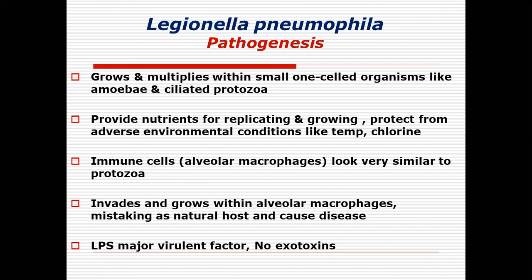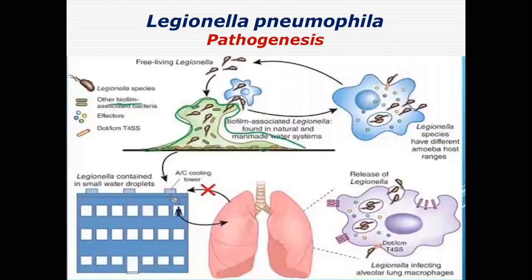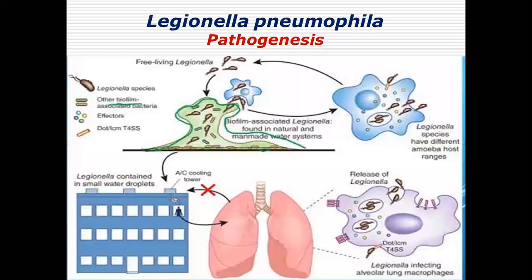This is a unique organism in that it defeats the alveolar macrophages — its supposed protectors — and causes disease within them. The lipopolysaccharide (LPS) is the real virulence factor, acting as an endotoxin. There is no exotoxin. The LPS goes into the environment and is aerosolized by structures like AC cooling systems.